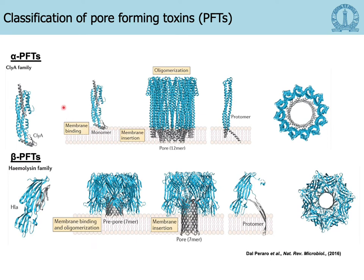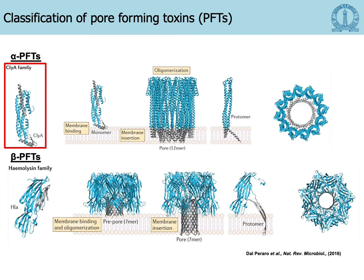A broad classification of PFTs is into alpha-PFTs and beta-PFTs. The alpha-PFTs are rich in alpha helices as you see here, and the beta-PFTs are rich in beta sheets. Beta-PFTs have been more widely studied since the pore-formation mechanism is driven by a beta-barrel that inserts into the membrane interface, and there are a larger number of crystal structures elucidated for beta-PFTs compared to alpha-PFTs. The challenge in alpha-PFTs is understanding how the alpha helices undergo conformational changes when they bind to the membrane and form the large pore complex, illustrated here for CytolysinA, which is the focus of this talk.